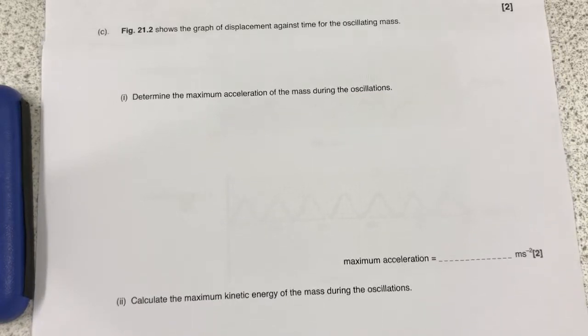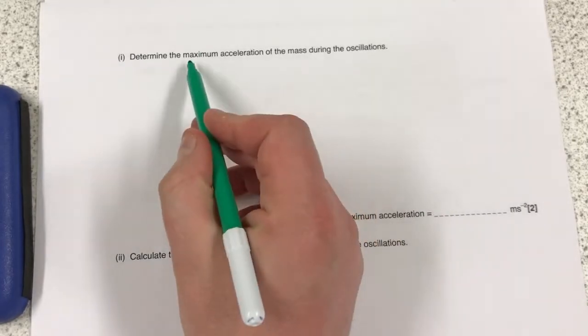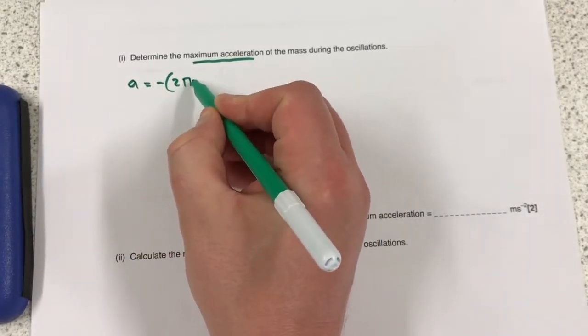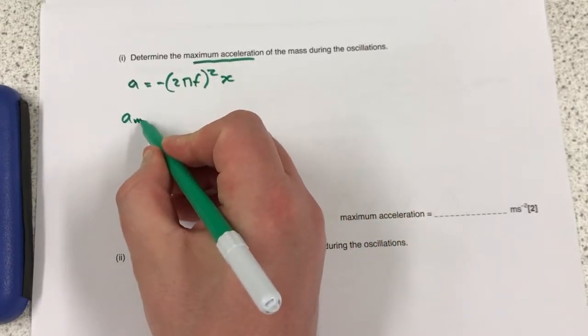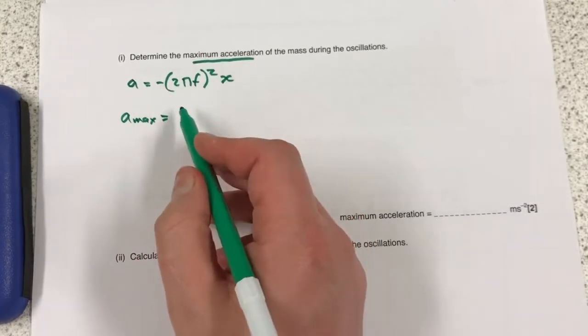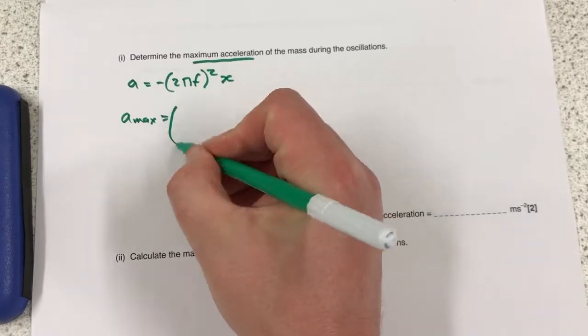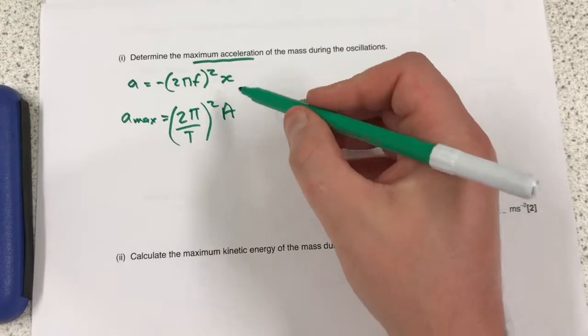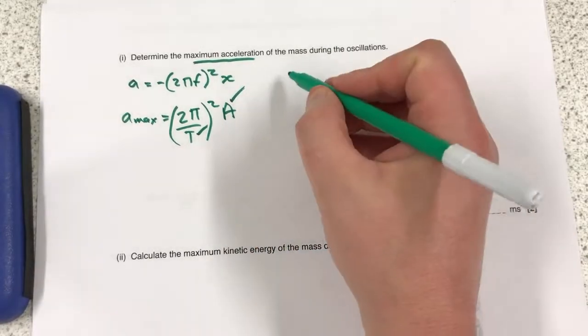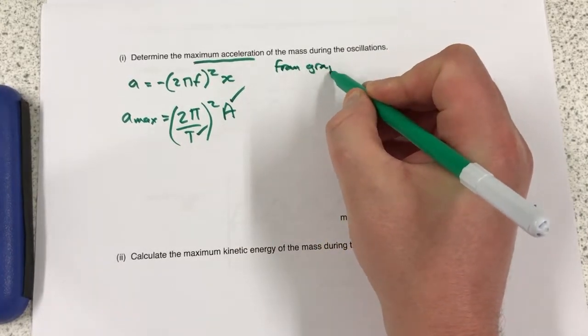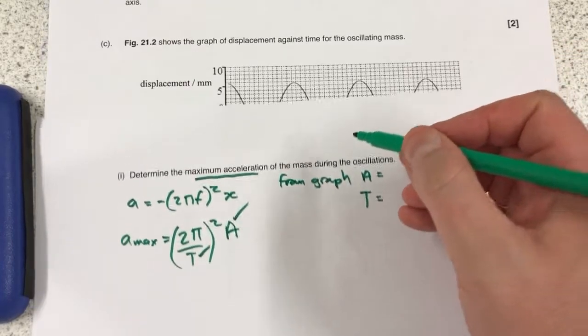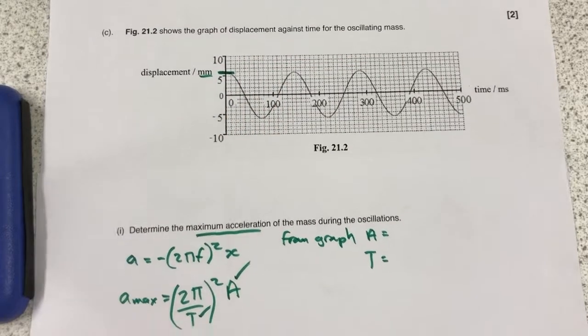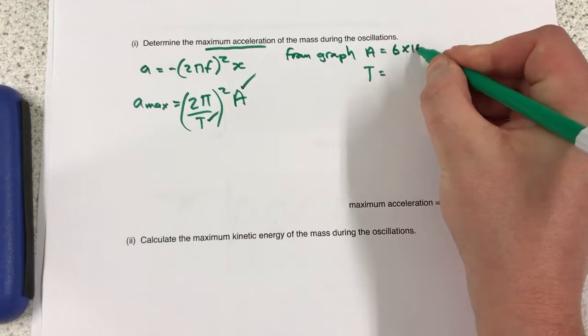And on to 16C part one. Determine the maximum acceleration of the mass during the oscillations. Well, we know that a equals minus 2 pi f squared x. We know that a max would occur at maximum acceleration. So if we get the minus sign, the displacement would become the amplitude. And I'm just going to skip a step by putting 2 pi over the time period instead of f squared amplitude. So amplitude, we could probably read off the graph. And time, we could probably read off the graph as well. So from the graph, a equals capital T equals. Let's have a look at the graph. The amplitude seems to be 5 and a little square, 6 millimeters. So the amplitude, 6 times 10 to the minus 3 meters.